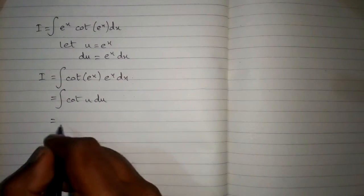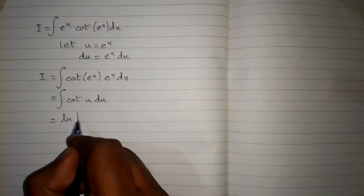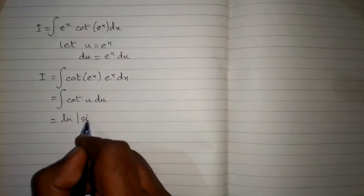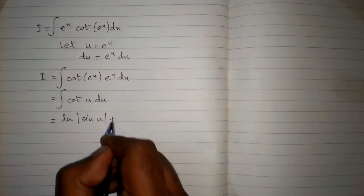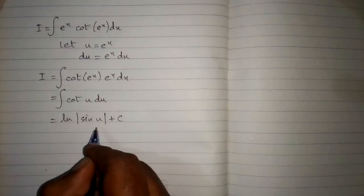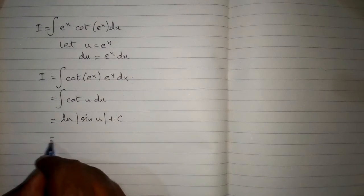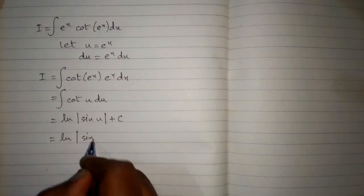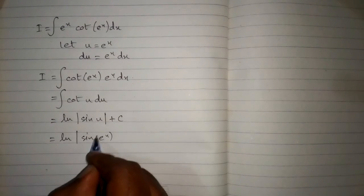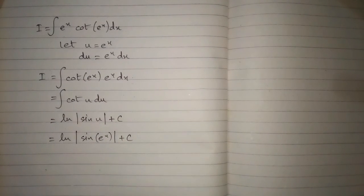The integral of cot u is ln of sin u plus c. Now we put back the value of u, which is e to the power x, so we have ln of sin of e to the power x plus c.